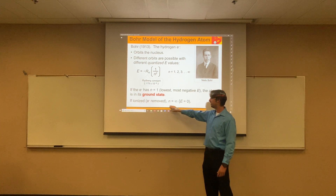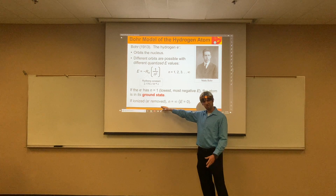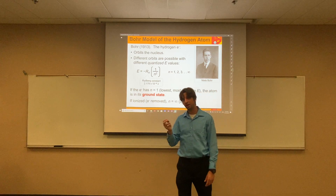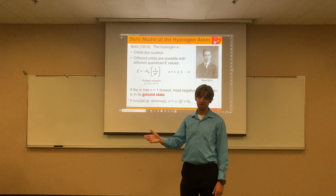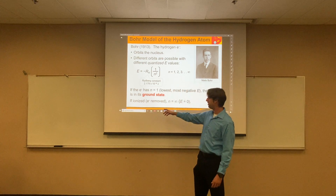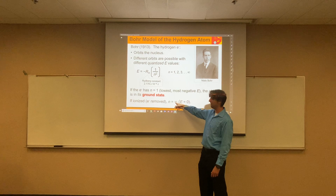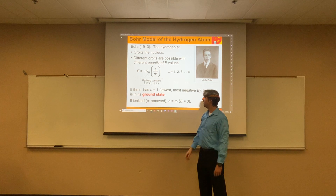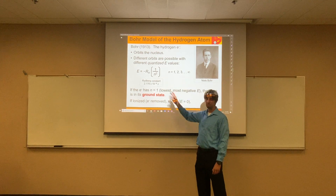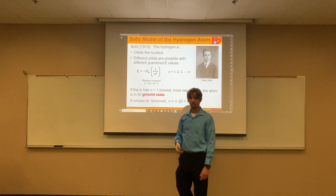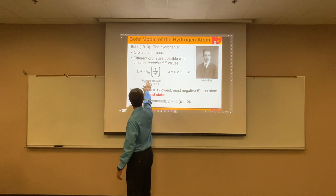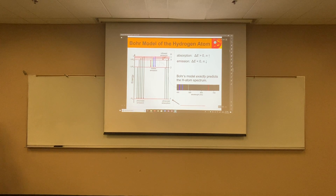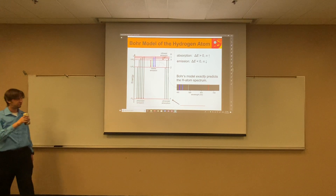We're going to talk about this concept again in about one or two chapters — the idea of how we can completely remove an electron from an atom. That's ionization energy. All we're talking about with ionization energy is taking N to infinity, so we have one over infinity squared — essentially one over infinity — which means we completely remove our electron from that particular atom. This equation sets up a model for what the atom looks like in terms of the energy level for the individual electrons.